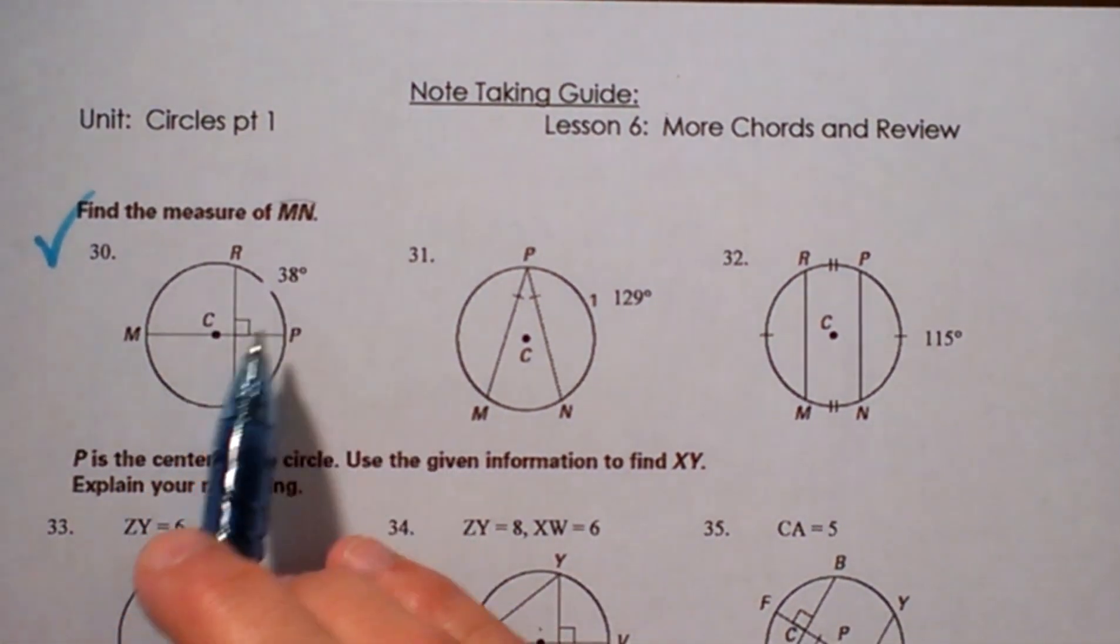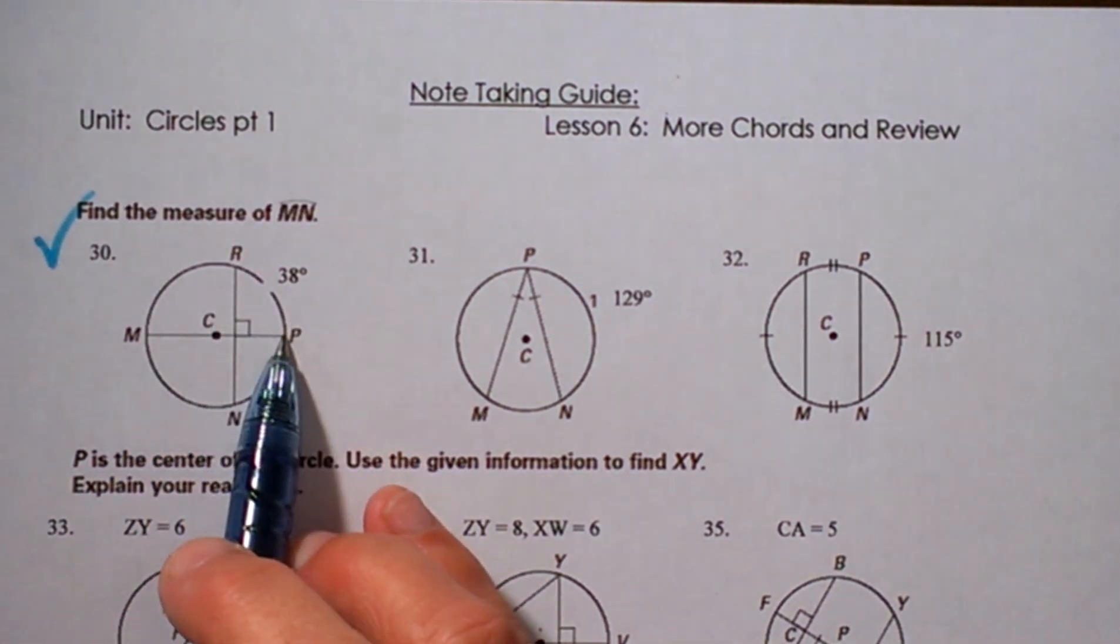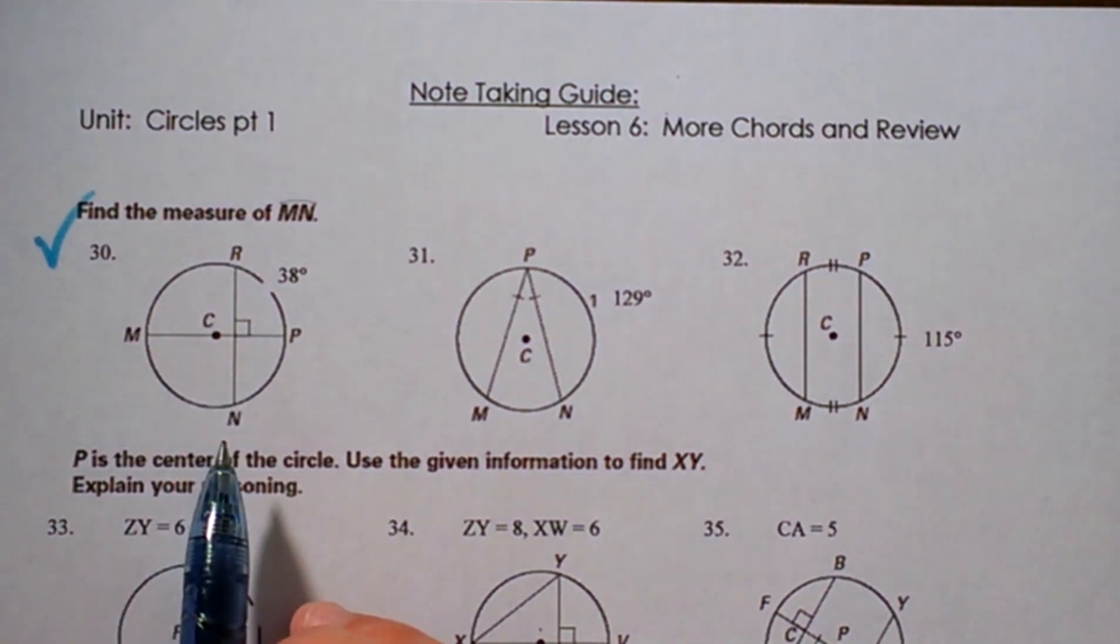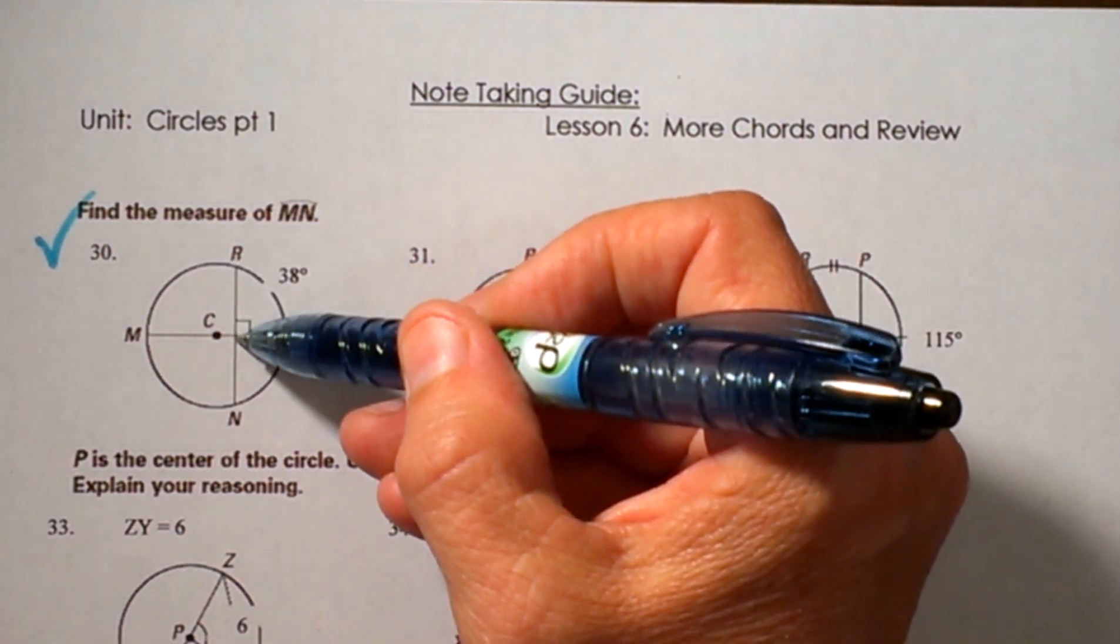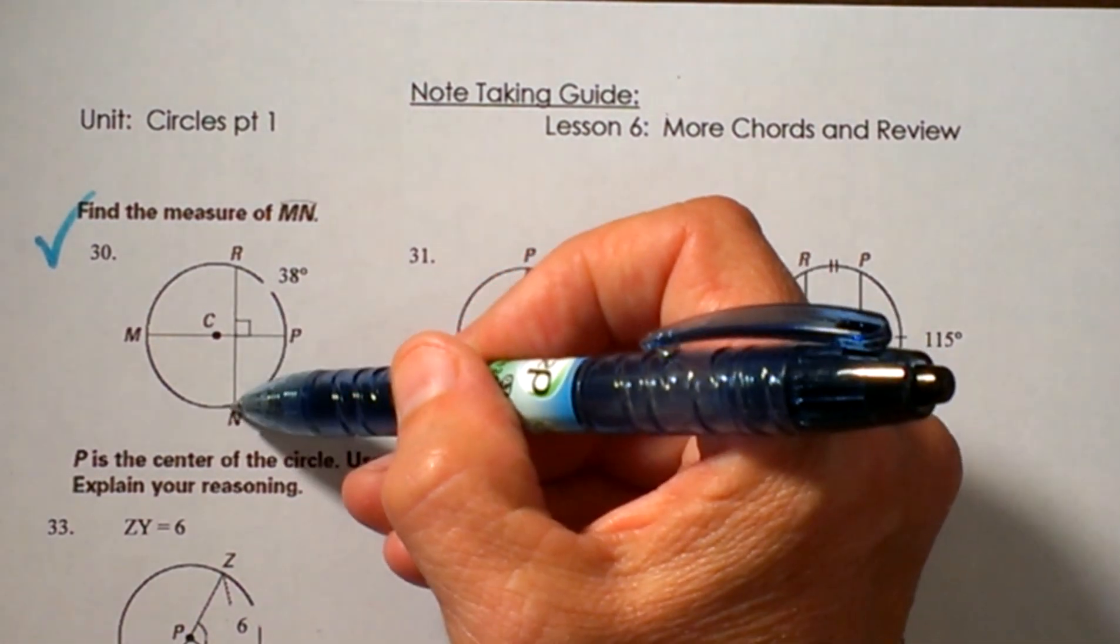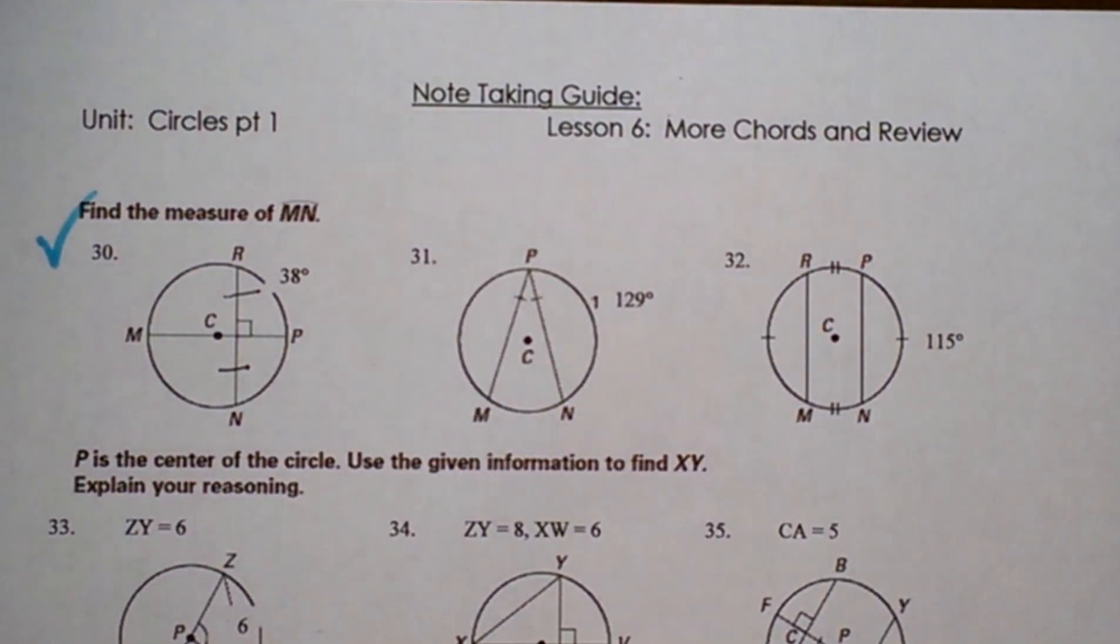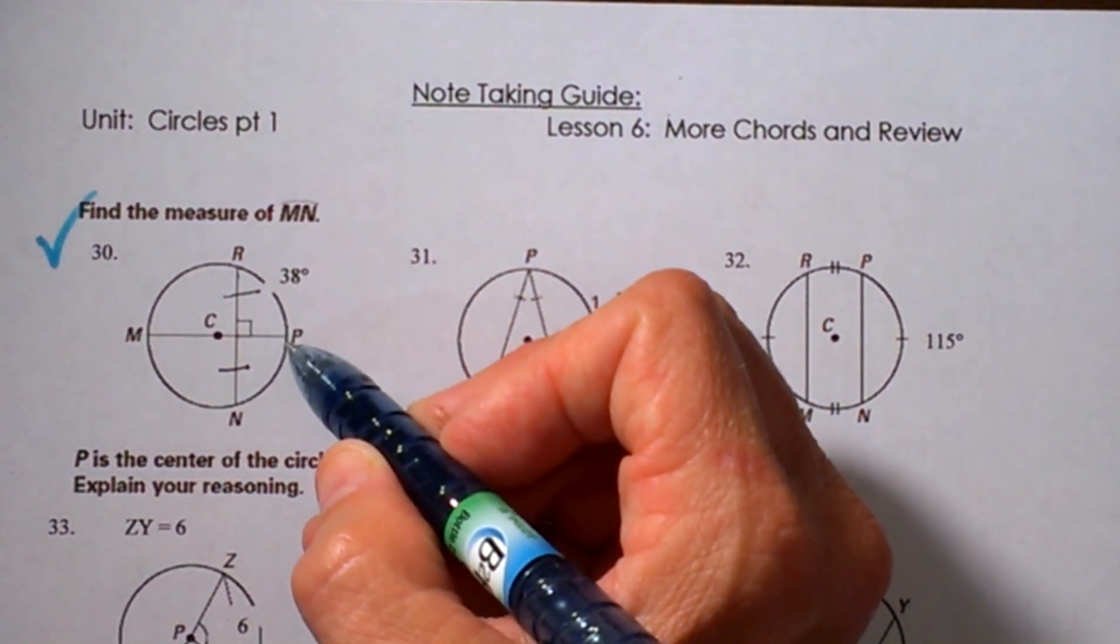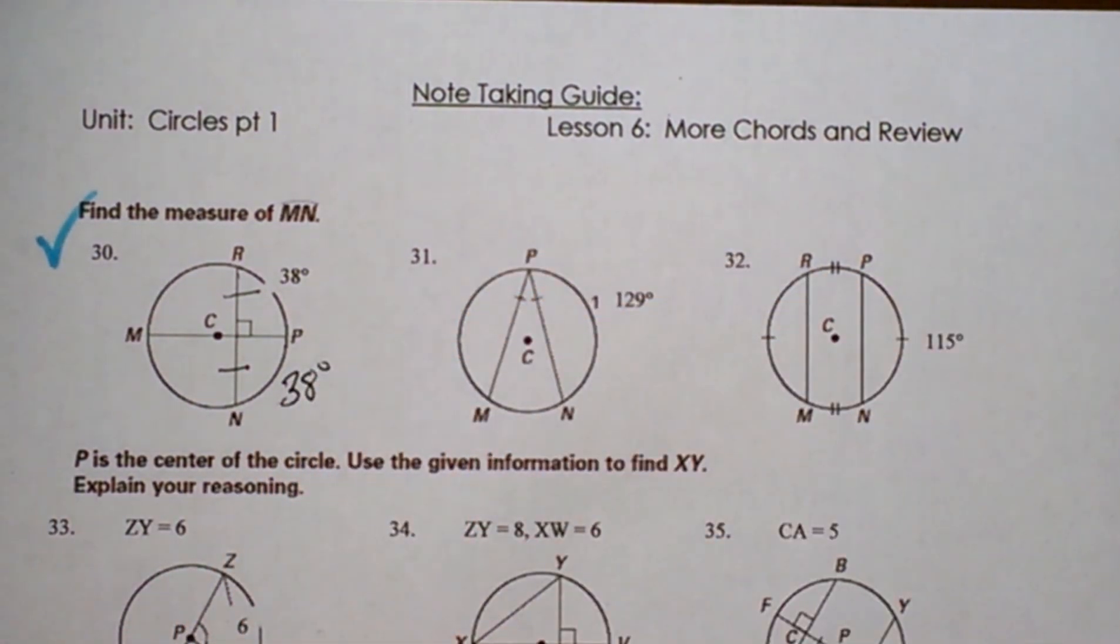Number 30. We have a circle with an arc of 38 and then we have this perpendicular angle here. What does that tell us? Well, it tells us that the chord are to this radius or diameter is congruent to this chord. So I'm going to mark those two congruent to each other. Now if those two chords are congruent to each other, that means this arc RP and PN are also congruent to each other, so I can mark that one as 38.